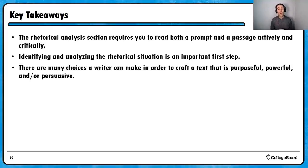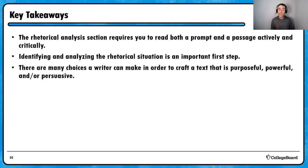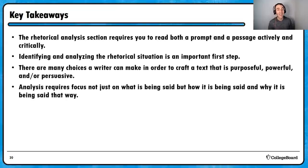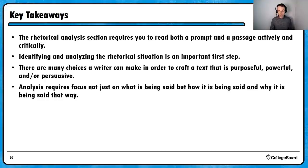For the sake of closure, a handful of key takeaways I'm hoping you heard today. Number one: the rhetorical analysis section requires you to read both a prompt and a passage critically and actively—it is a reading test first. We can't jump ahead to our writing; we have to invest the time, energy, and effort into reading successfully. Number two: identifying and analyzing the rhetorical situation is an important first step—think about the exigence of the passage, and the SOAPS elements: message, author, purpose, speaker, subject, and occasion. Third: there are many choices a writer can make to craft a text that is purposeful or persuasive. You don't need to see all of them, and you don't need the same terminology. Analysis requires focus not just on what is being said, but how it's being said, and why it's being said that way. Our job is not to summarize the author's message but to analyze how the author constructed the passage, and why—how those choices helped the author achieve their purpose given the specific rhetorical situation.